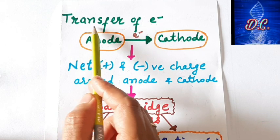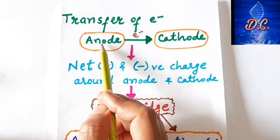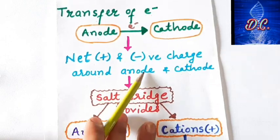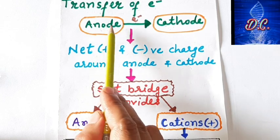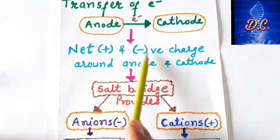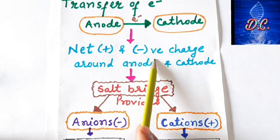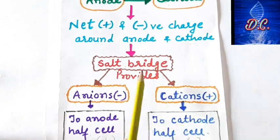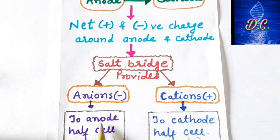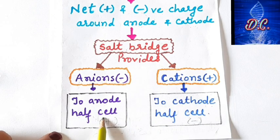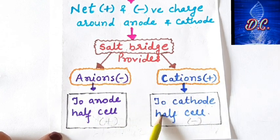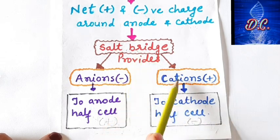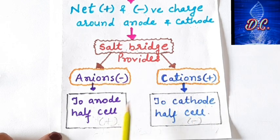Due to the transfer of electrons from anode to cathode, net positive charge develops around the anode and net negative charge around the cathode. Without correction, current flow would stop. The salt bridge provides opposite ions — anions to the positively charged anode half cell to cancel the positive charge, and cations to the negatively charged cathode half cell to neutralize the negative ions. This is how the salt bridge maintains electrical neutrality in both half cells and keeps the current flowing.